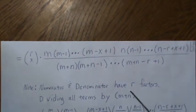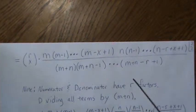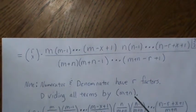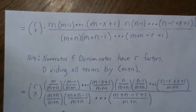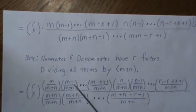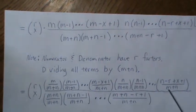So the numerator and denominator both have r factors. We're going to divide all of them by m plus n, and that's what this step is. Each one of these terms is divided by m plus n.